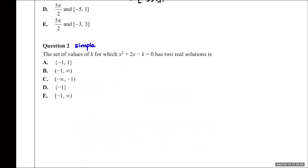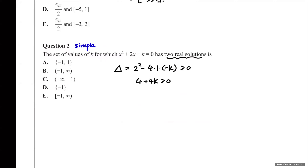Question 2. The set of values of k for which x² + 2x − k = 0 has two real solutions. The discriminant is 2² minus 4 times 1 times minus k, which must be greater than 0. So 4 + 4k > 0, therefore 4k > −4 and k > −1. Option B is the correct answer.